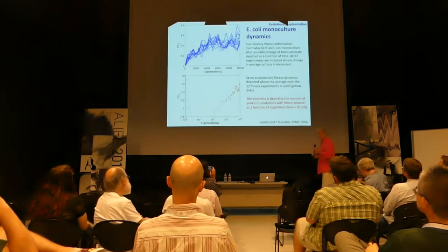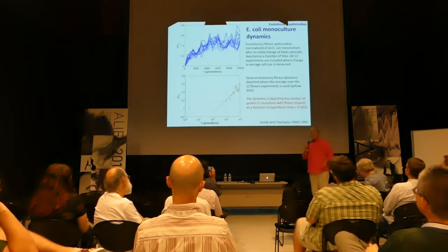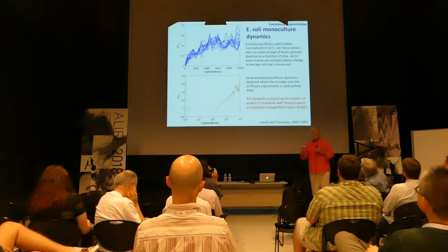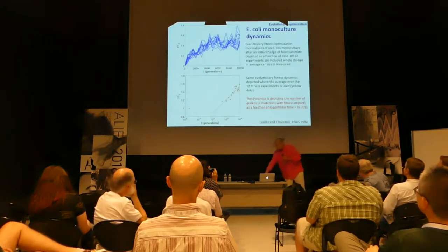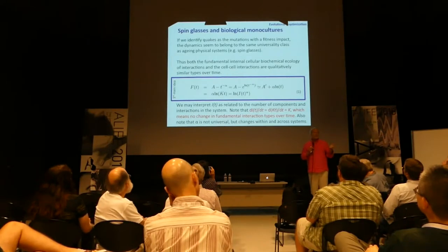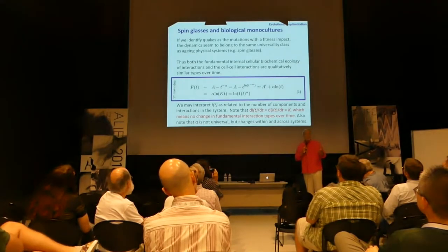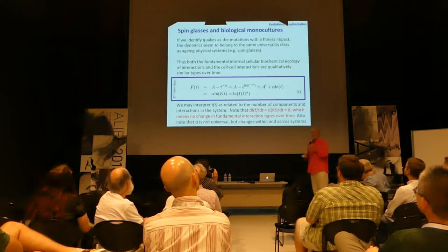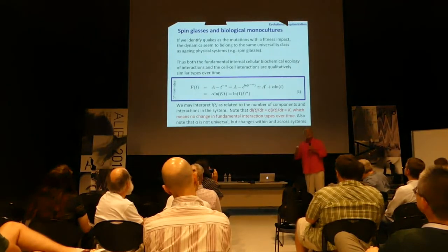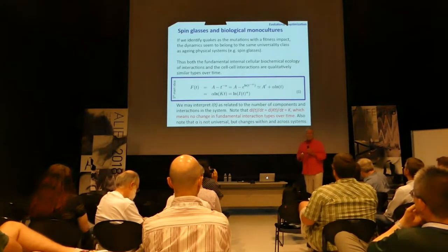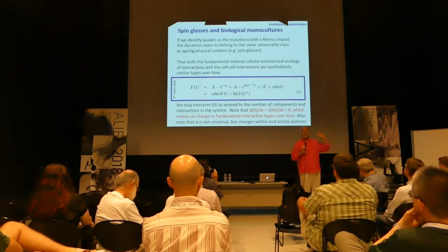The way we interpret this: before we had the quakes — those are the changes in the spin glass that result in measurable changes in the free energy. Here the quakes are, of course, the mutations that actually have an impact on the fitness function. This means we get the same universality class of dynamics between the simple physical system, the spin glass, and the simple biological system, the monoculture of E. coli. In this context they have exactly the same universality dynamics, which means we have to interpret that both the components and the interactions, the quality of the components and the interactions in the E. coli, do not change over time, at least not at this high level that we are measuring.